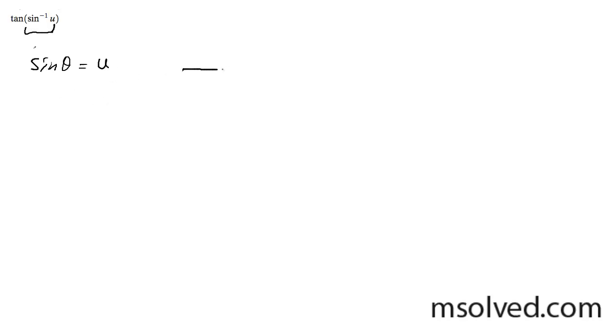Now, what we have here is the opposite over the hypotenuse. We write u on the opposite side over 1. The tangent is going to be the opposite over adjacent, so in this case,